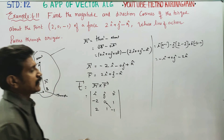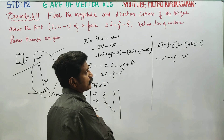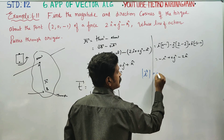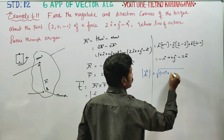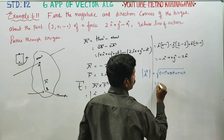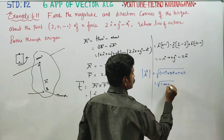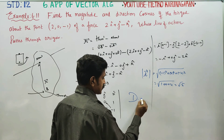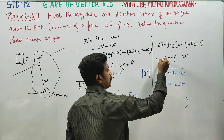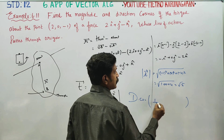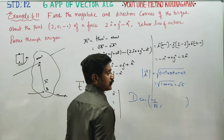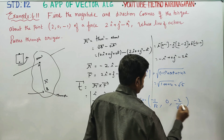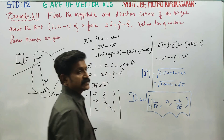Magnitude of torque: the T-vector magnitude is the square root of a² + b² + c². So it is √(1² + 0² + (−2)²) = √(1 + 0 + 4) = √5. Direction cosines: l = 1/√5, m = −1/√5, n = 0, and the k-component gives −2/√5. These are the direction cosines of the torque.